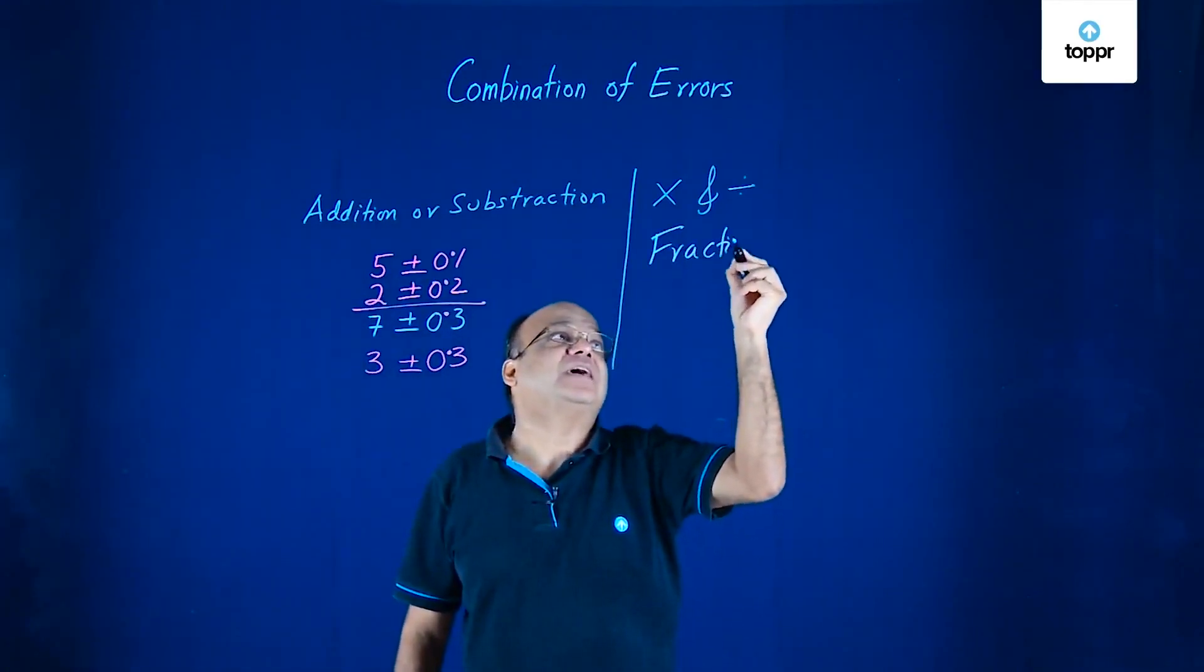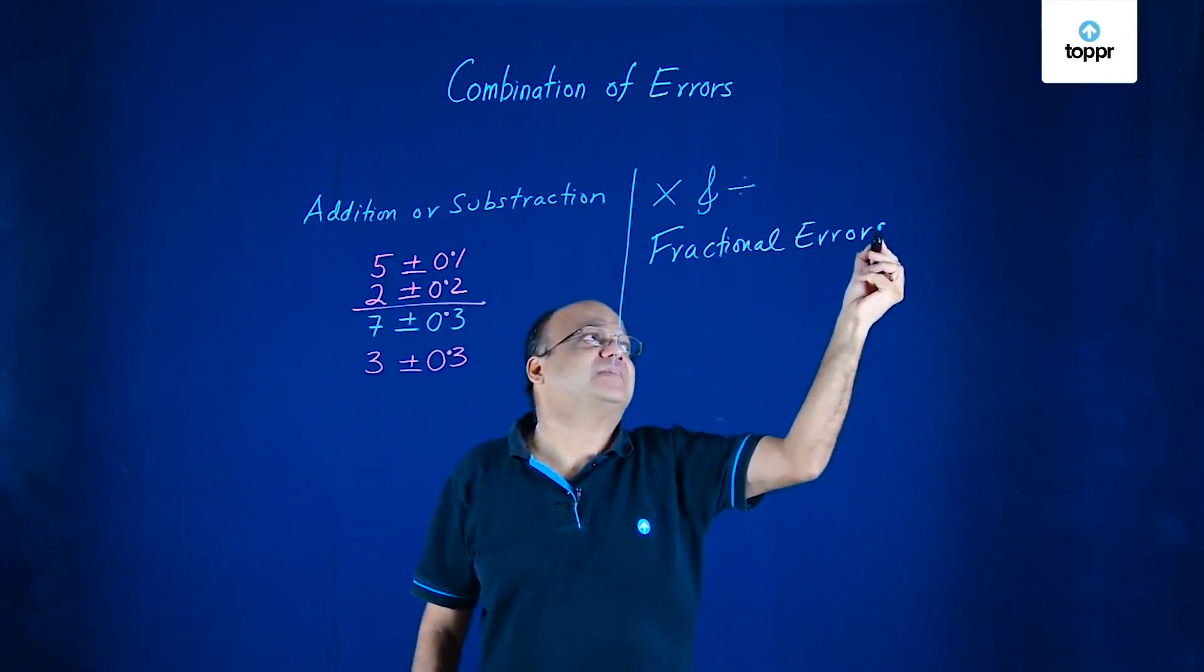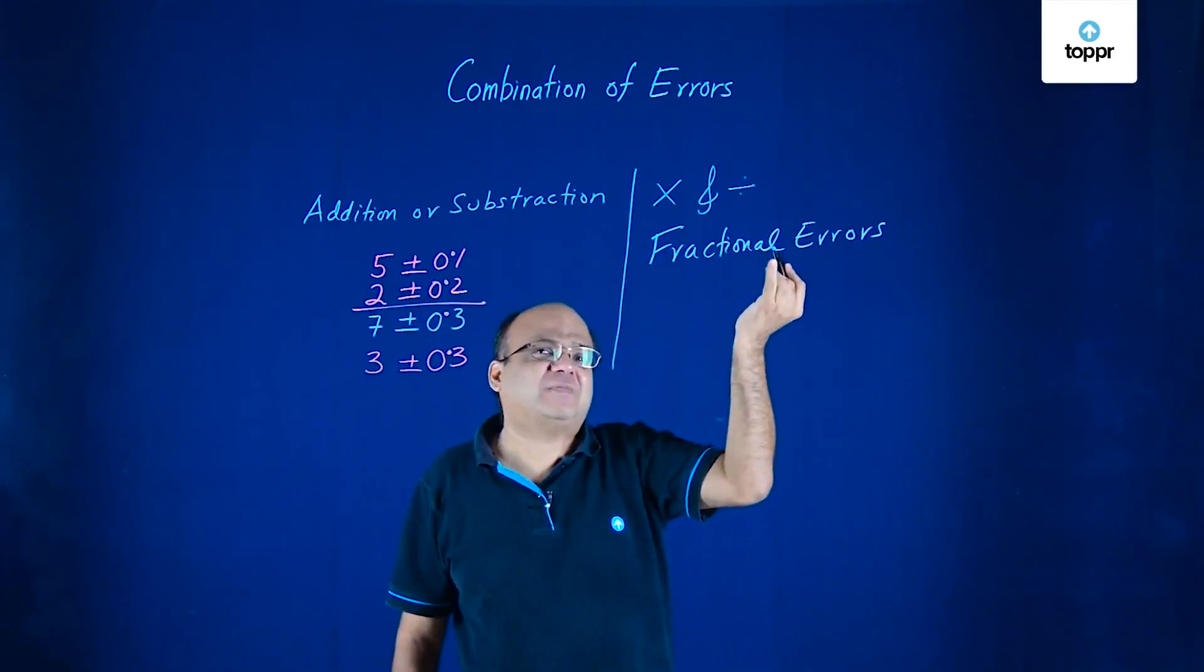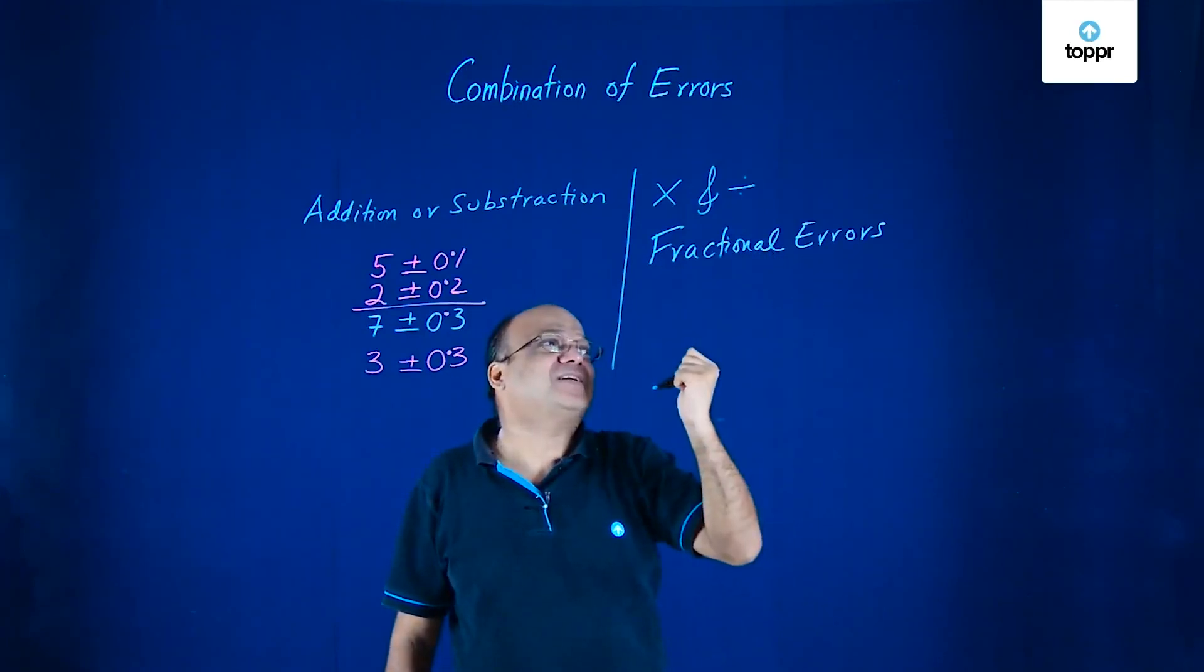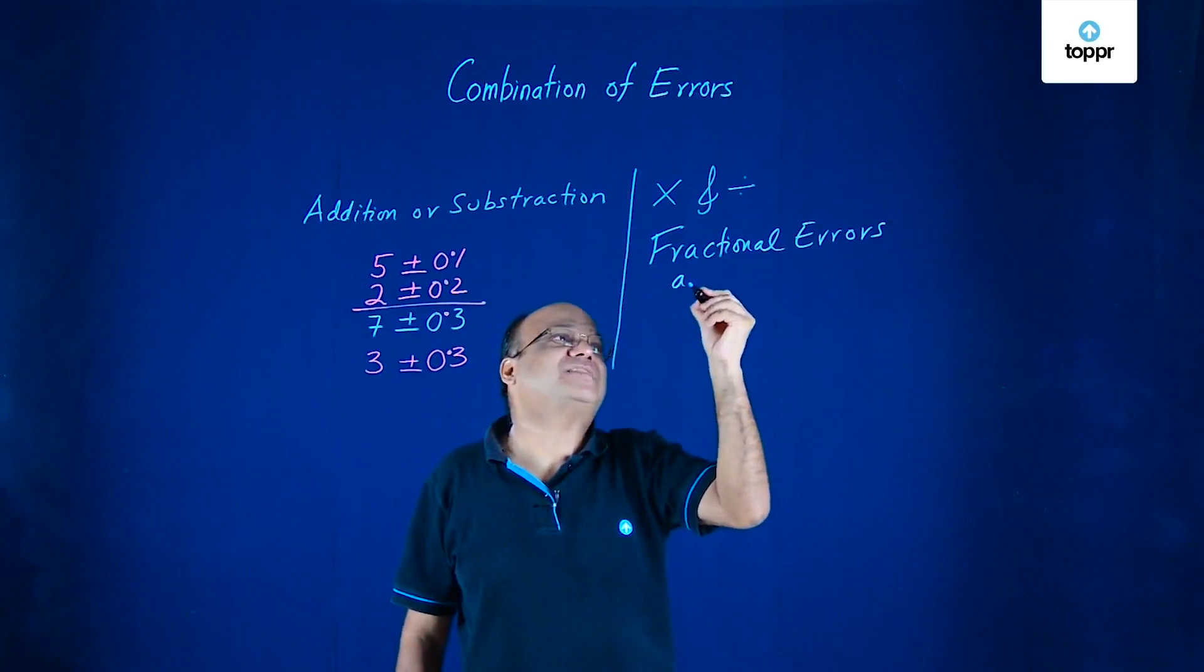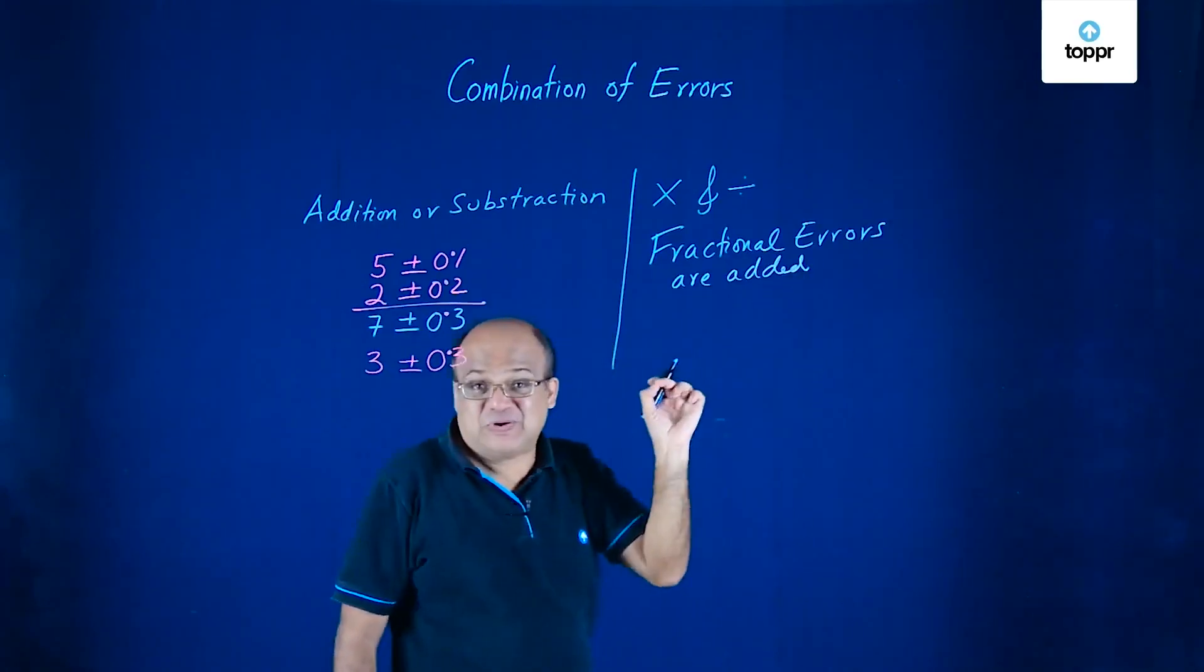Here fractional errors are added or you can say percentage error because fractional errors into 100 will give us percentage errors. So fractional errors are added. Not absolute errors.